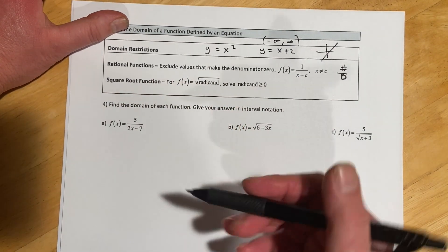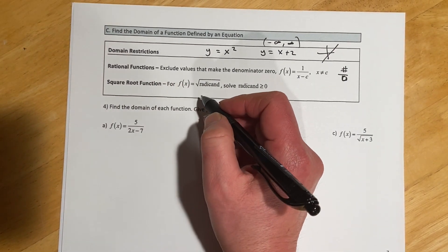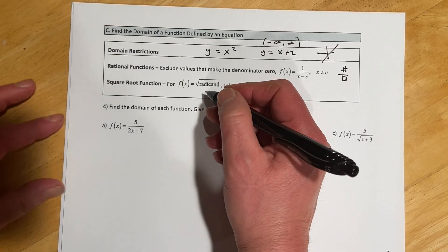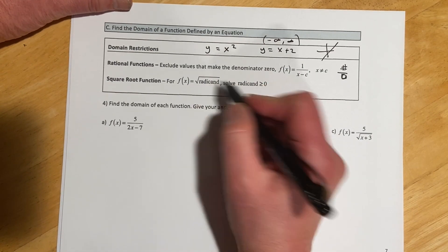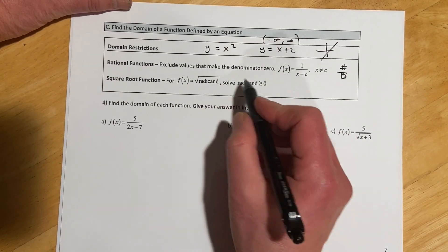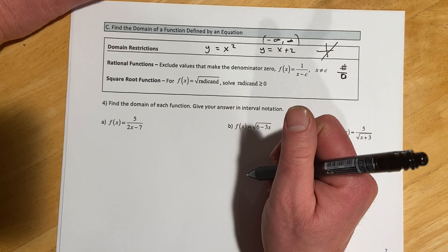And then for square root functions, for those, we can take the roots of, we take the root of zero, we can take the root of a positive number, but not negatives, or at least not an even root. And in this case, we're looking at square roots. So the radicand is going to have to stay greater than or equal to zero.